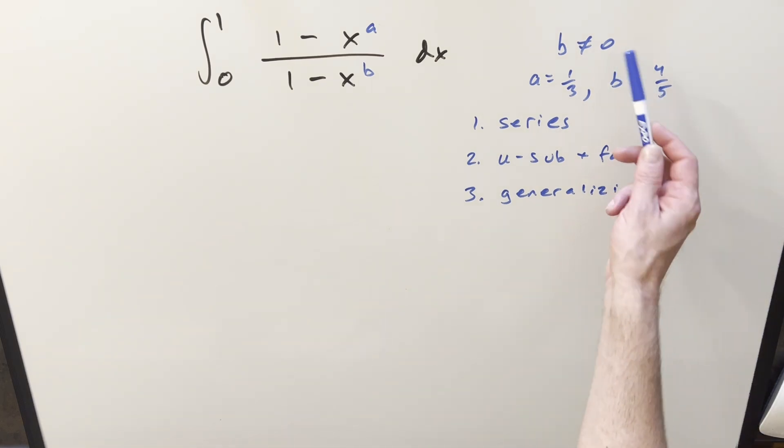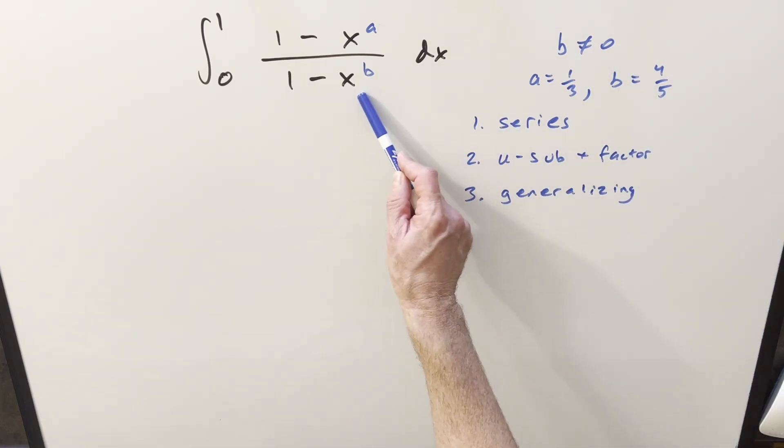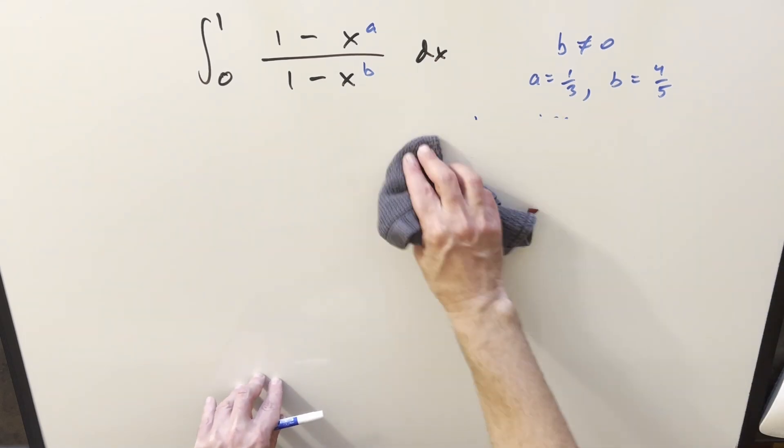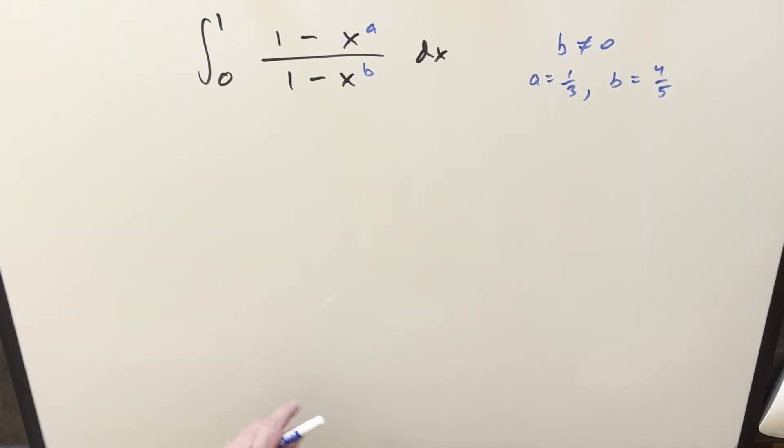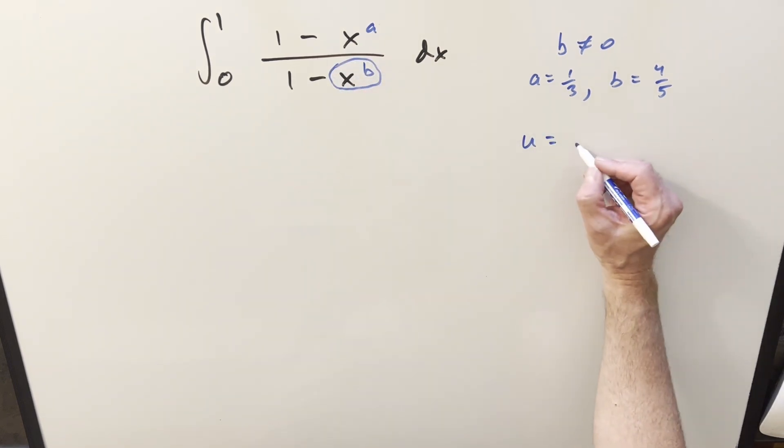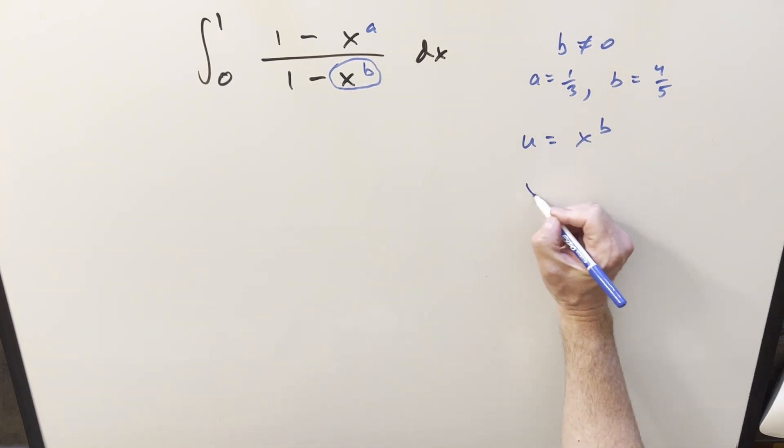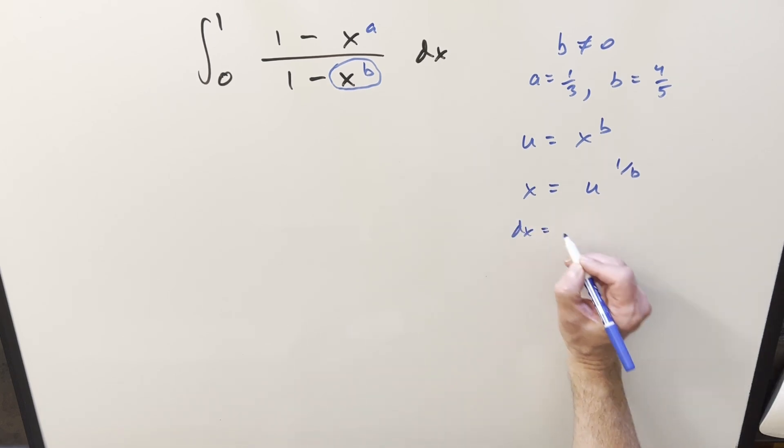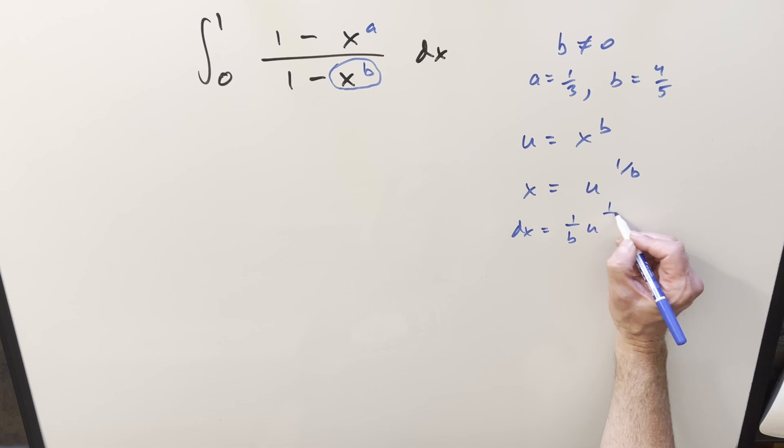The reason I say b can't be 0 is because if you plug in a 0 there, you're going to be dividing by 0 in the denominator. So to get started with it, we'll just get rid of this over here. And I want to start with a u substitution. So for my u substitution, let's substitute. I want to clean up this part right here. So I'm going to set my u equal to x to the b. And then solving for x, we have x is u^(1/b). Take a derivative with power rule. This becomes 1/b u^(1/b - 1) du.